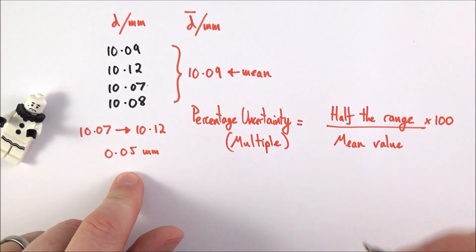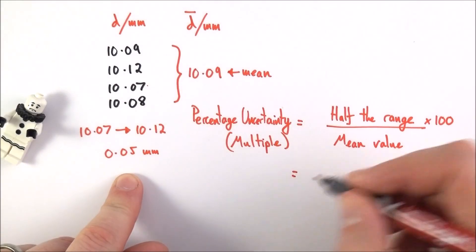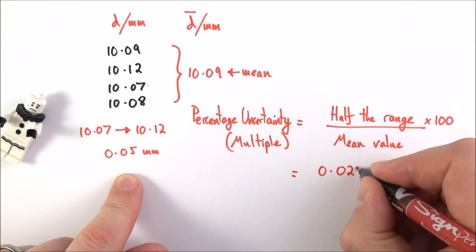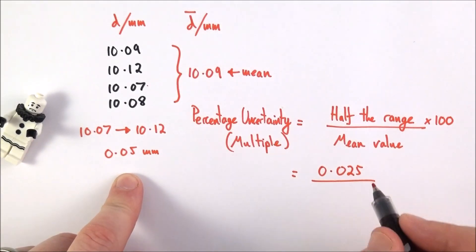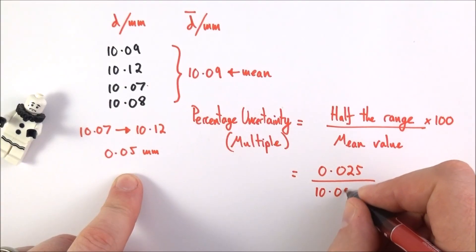And if we look at the example here, well the range is 0.05 of a millimeter, so half the range is going to be equal to 0.025 of a millimeter.